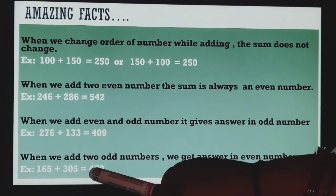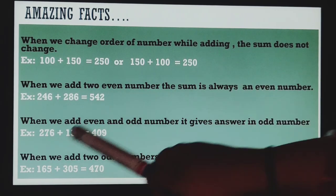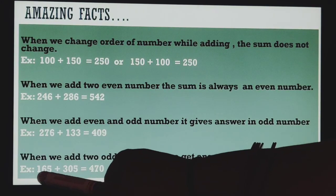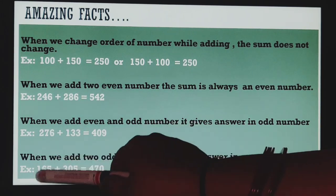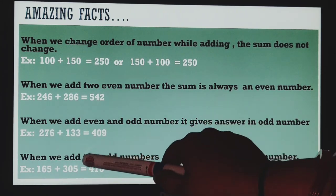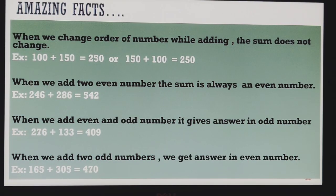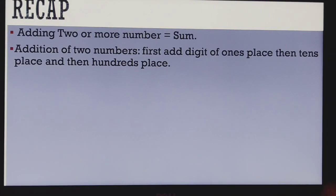When we add two odd numbers, we get answer in even number. See, this number is an odd number. 165 plus 305, both are odd numbers. But we will get the answer in which number? In even number. Okay students, I hope you all are understanding this 3-digit number and its regrouping. Now if you have missed anything, let's revise each and everything quickly.